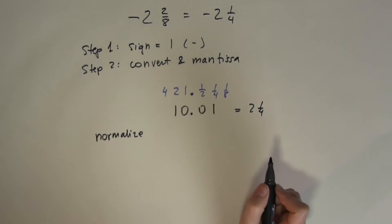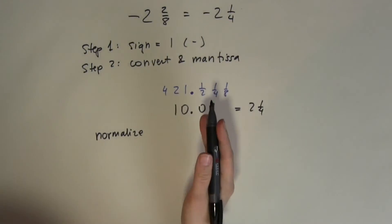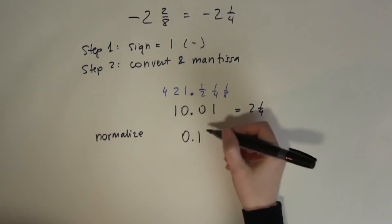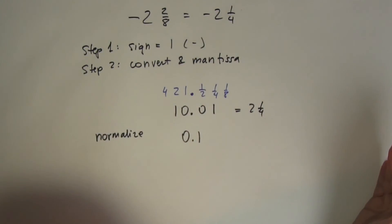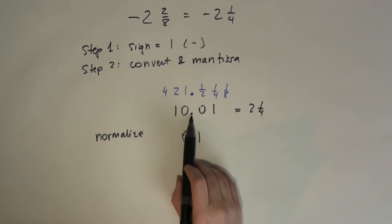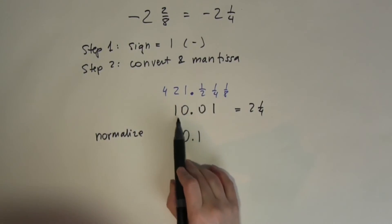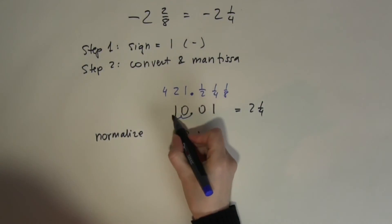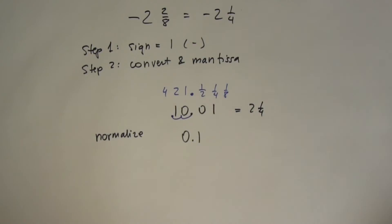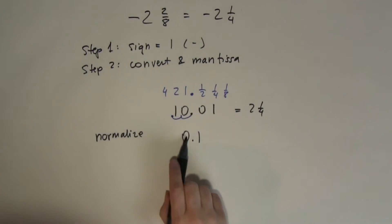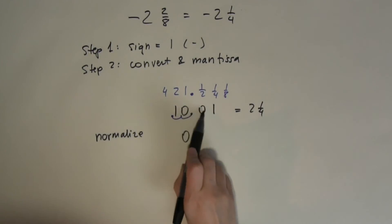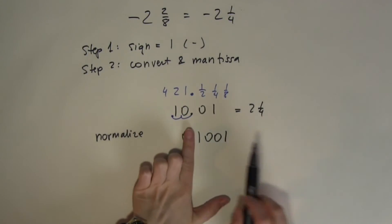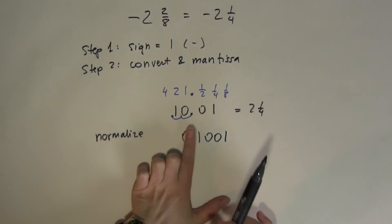Now we need to normalize it. The normalization process means bringing it into the 0.1 format, with the rest of the digits following. So I move the decimal point to the front, giving 0.1001. The part that follows after the point — 1001 — will be our mantissa.